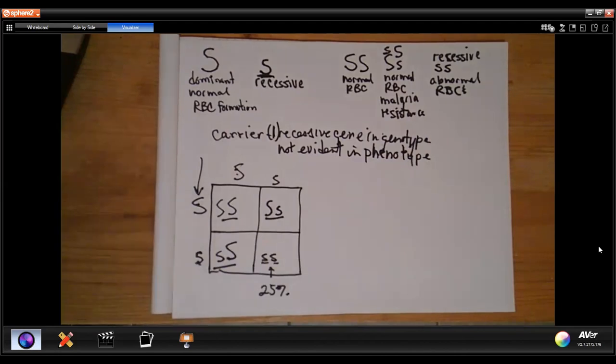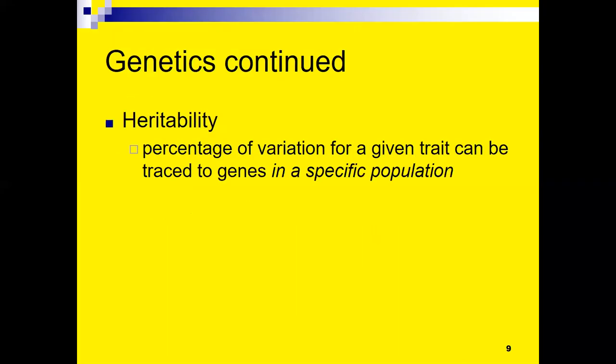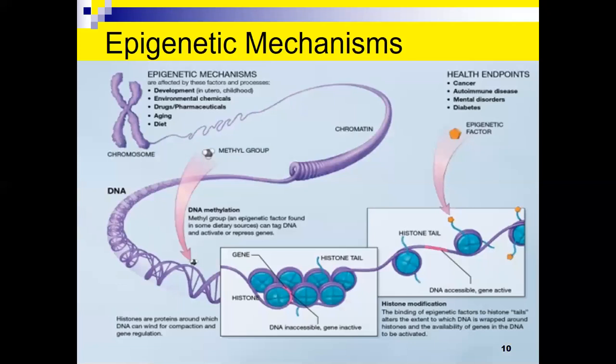When we hear about heritability studies, what they're measuring is what percentage of variation for some given trait can be traced to genes in a specific population. Our discussion here wouldn't be complete without also looking at epigenetic mechanisms — mechanisms that produce a change in outcomes, not through inheriting different genes, but through a mechanism that acts on existing genes.